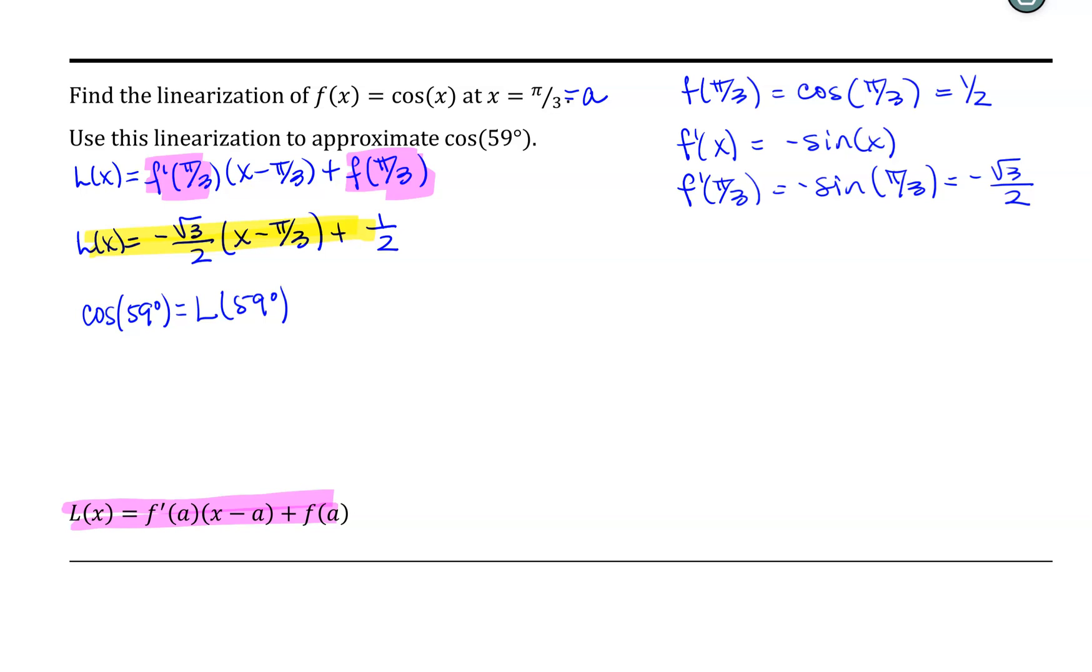In calculus, we always work with angles in radian measure. And you'll notice that this is in degrees. So we need to back up and we need to convert our 59 degrees to radians.